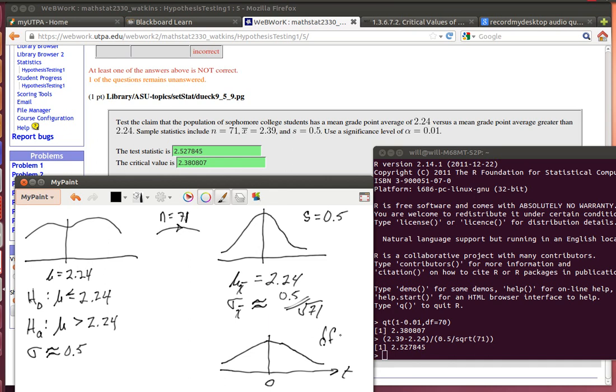In this case, the degrees of freedom is 70. We're testing to see if this null hypothesis that the mean is 2.24 is correct against the alternative hypothesis that mu is greater than 2.24. All of the alpha will go up in the right side because of the alternative hypothesis, so this needs to be 0.01.